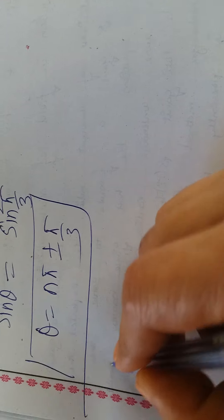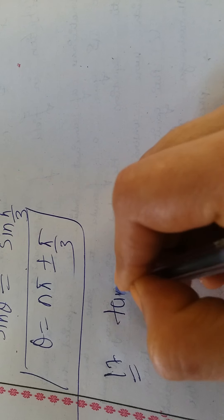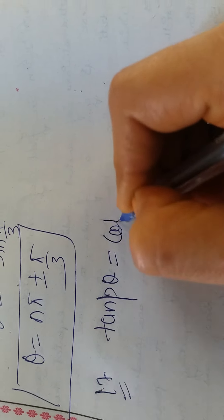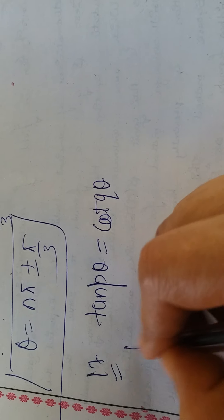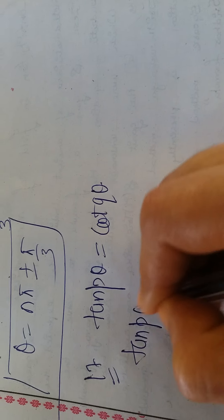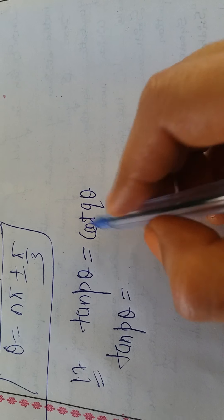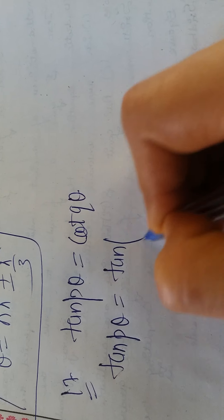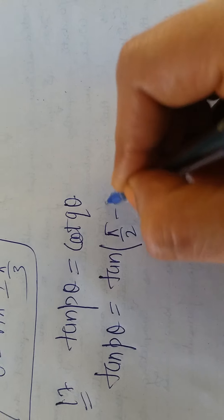Question number 17: tan(pθ) = cot(qθ). Since we have tan on the left and cot on the right, we can't directly apply a formula. So convert cot to tan using: cot(θ) = tan(π/2 - θ). So cot(qθ) = tan(π/2 - qθ).